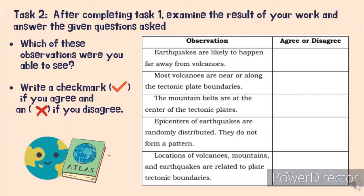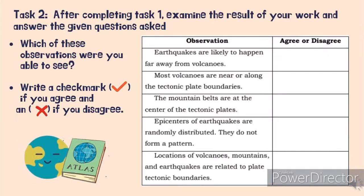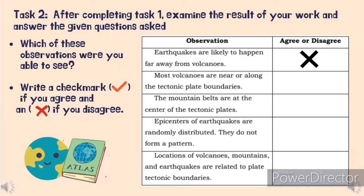Based on the result of your work in Task 1, you were asked to evaluate which observations you were able to see — putting a check mark if you agree and an X mark if you disagree. First statement: earthquakes are likely to happen far away from volcanoes. The answer is disagree, because most earthquakes are along the edges of tectonic plates, and this is also where volcanoes are found.